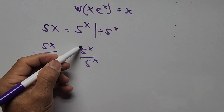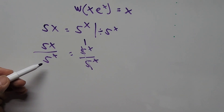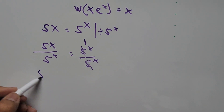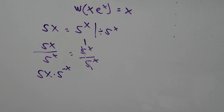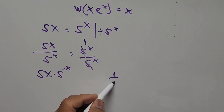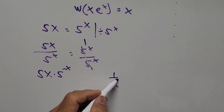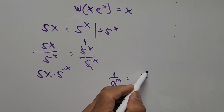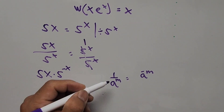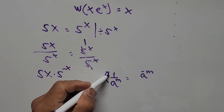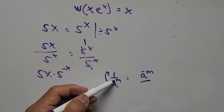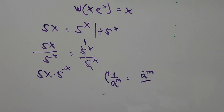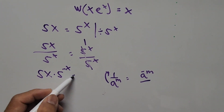Here, 5 to the power of x cancels on the right-hand side. On the left-hand side we have 5x times 5 to the power of negative x, from the exponent formula: 1 over a to the m equals a to the negative m. Moving the denominator to the numerator, positive becomes negative. And the right-hand side is 1.